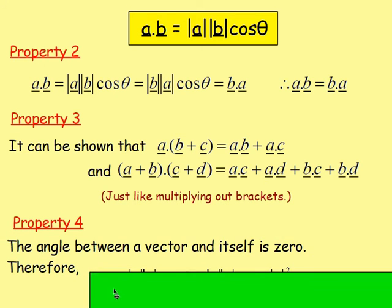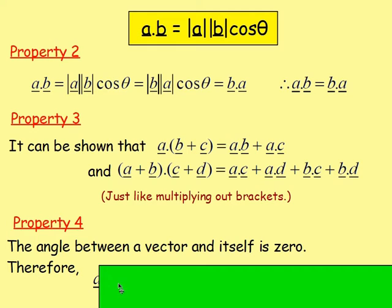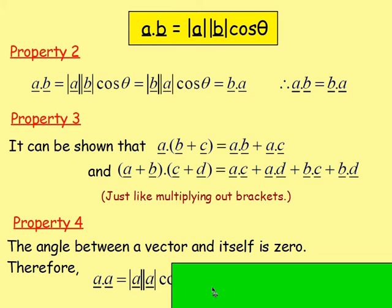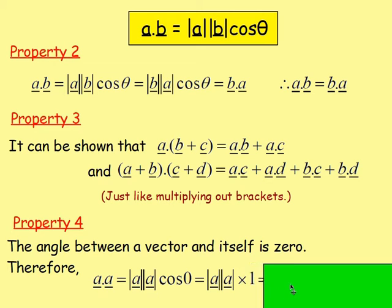Another property: the angle between a vector and itself. If you have two vectors that are actually the same one, they lie on top of each other and the angle between them is 0. So A dot A equals magnitude of A times magnitude of A times cos 0. Cosine of 0 is 1, so it's magnitude of A times magnitude of A times 1 — in other words, you just get the magnitude of A squared.